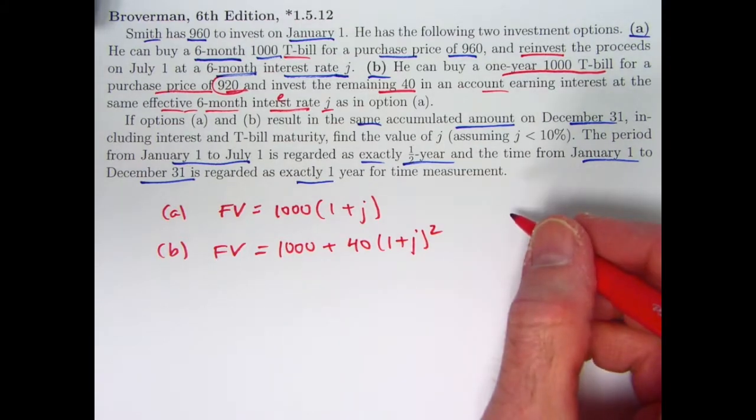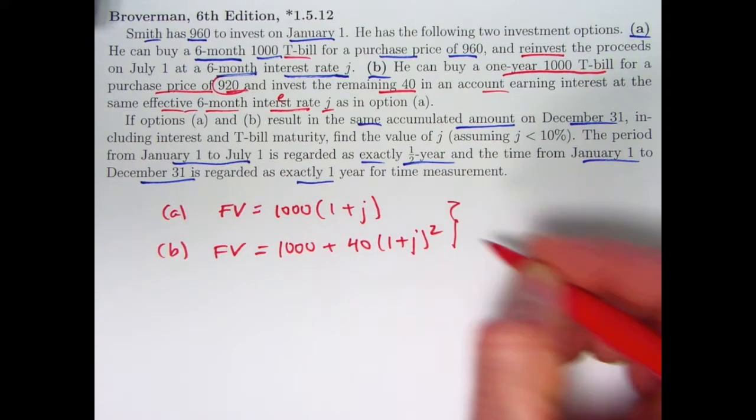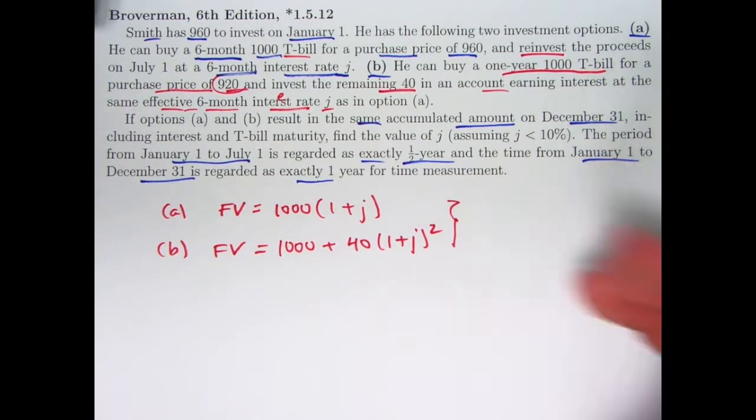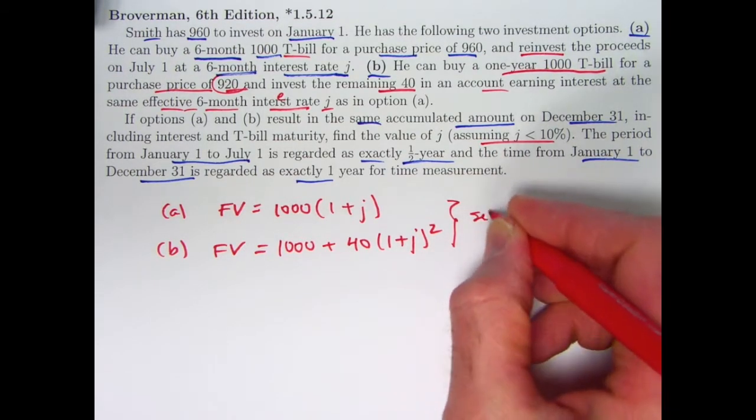You need to set these two things equal to each other and solve for J. You're going to get a quadratic equation, and so if you use the quadratic formula you're going to get two answers - you want the one that's less than 10 percent. Let's set these equal.